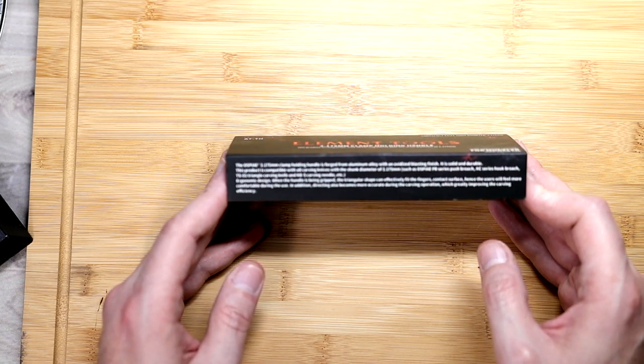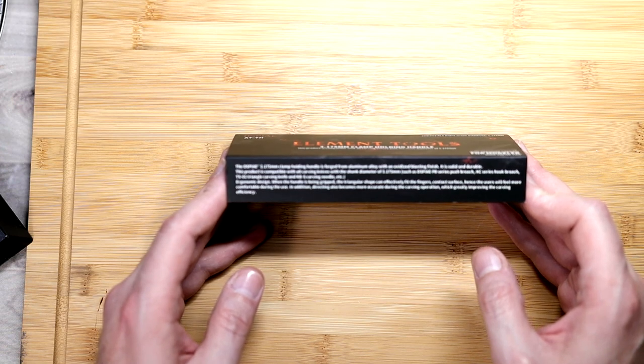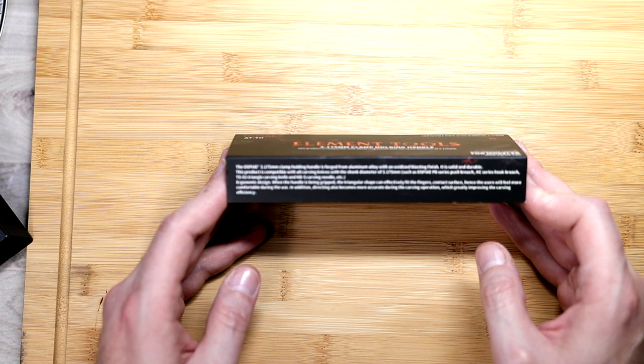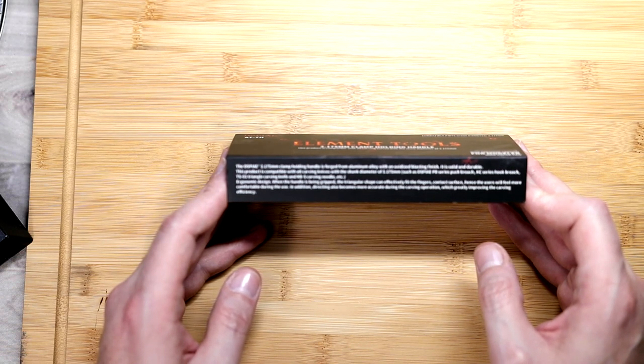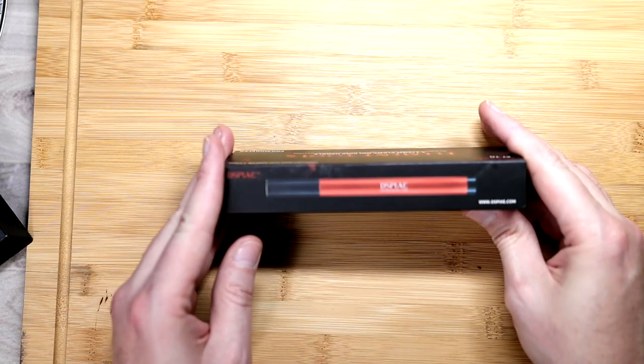The Display 3.175 millimeter holding handle is forged from aluminum alloy with oxidized blasted finish. It is solid and durable. This product is compatible with Display PB series push broach, HC series hook broach, TS01 triangle carving knife, and KB-S carving needle. Ergonomic design - the triangular shape can effectively fit with the fingers' contact surface, so users will feel more comfortable during use. In addition, directing becomes more accurate during carving operation.